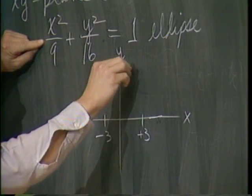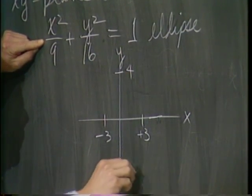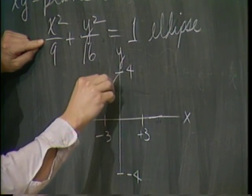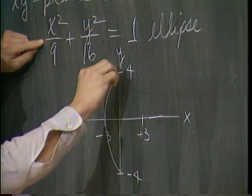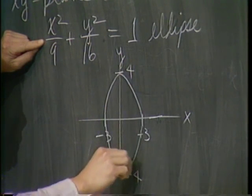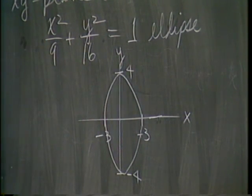Ellipses are pretty easy to sketch - x goes to plus minus 3 on the minor axis. It turns out the major axis is along the y axis with vertices at plus minus 4.